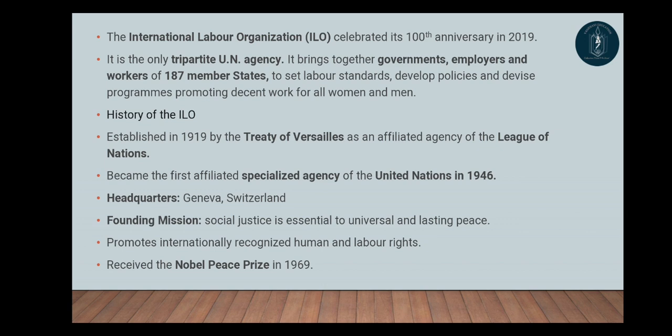As we all know, ILO stands for International Labor Organization. It came into formation in 1919. It is the only tripartite UN agency — it brings together government, employers, and workers of 187 member states to set labor standards, develop policies, and devise programs promoting decent work for all women and men.